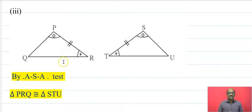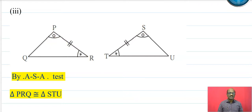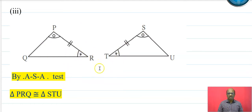Now in triangle TQR and triangle STU: angle P is congruent to angle S, segment PR is congruent to segment TS, and angle R is congruent to angle T. Therefore these two triangles are congruent by the ASA test, and triangle PRQ is congruent to triangle STU.